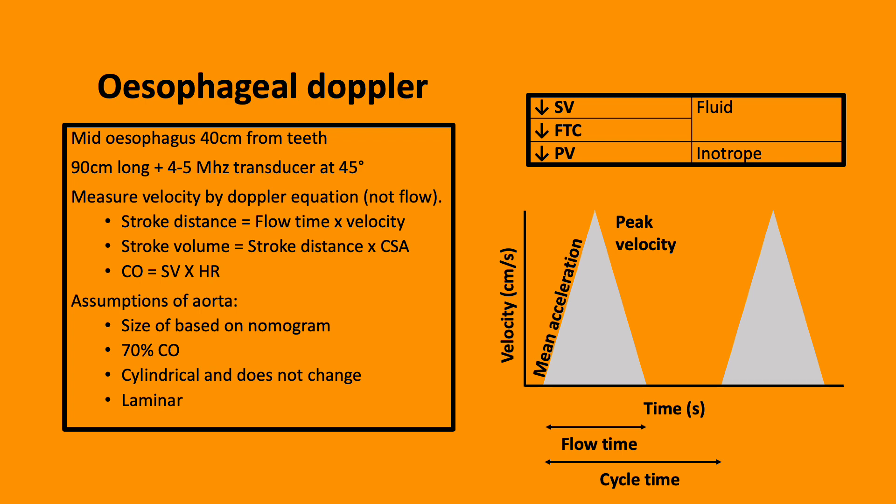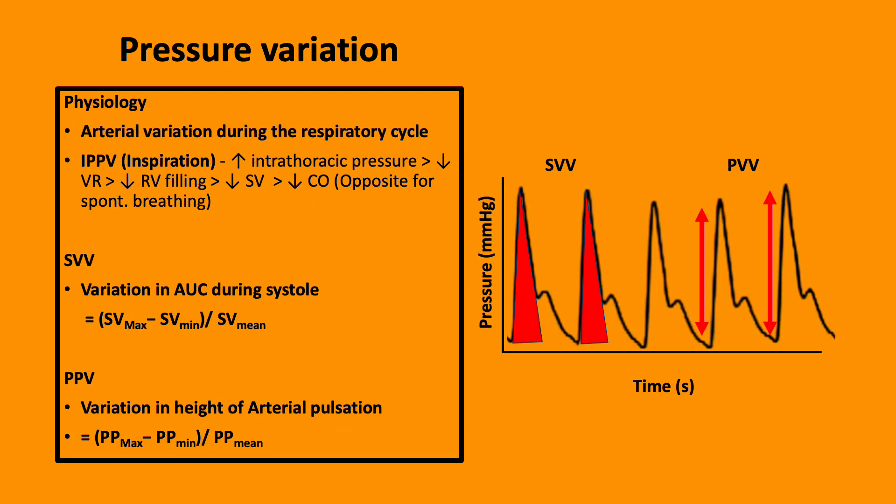Pressure variation. The arterial waveform is affected by changes in the respiratory cycle. During inspiration in a ventilated patient, there's increasing thoracic pressure, which ultimately results in a reduction in cardiac output.